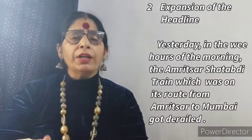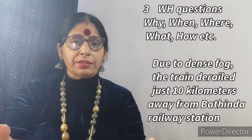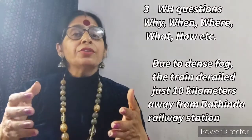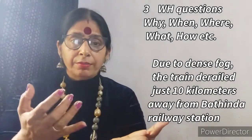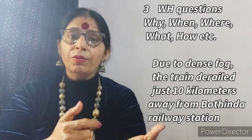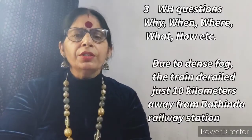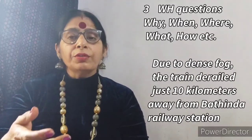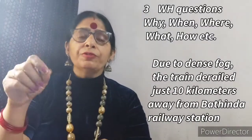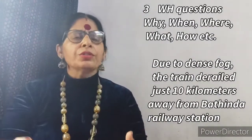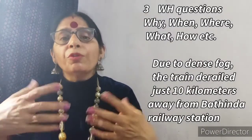The third value point is WH questions — when, where, what, how. For example: 'Due to dense fog, the train derailed just 10 kilometers away from Bhatinda Railway Station at 3 or 4 in the morning.' This way you cover why it happened, when, how, and where — all through further details.